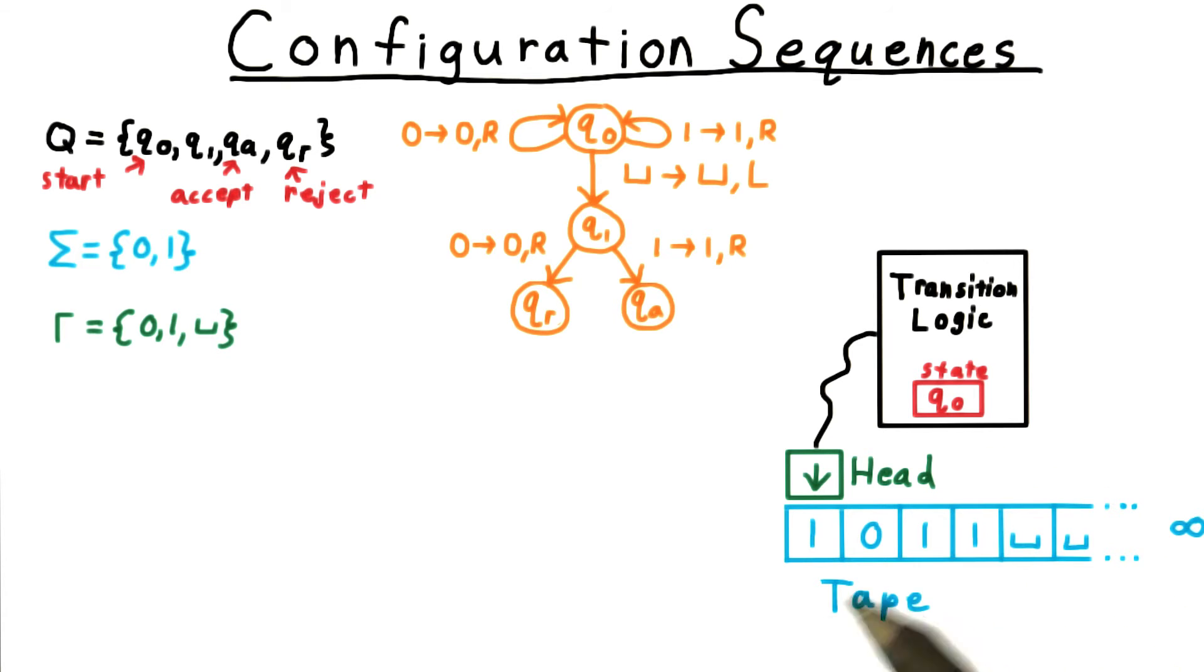this time writing down the configuration using this notation. We write the start configuration as q0, 1, 0, 1, 1. The part to the left of this state represents the tape contents to the left of the head. It's just the empty string in this case. Then we have the state of the machine, and then the rest of the tape contents.